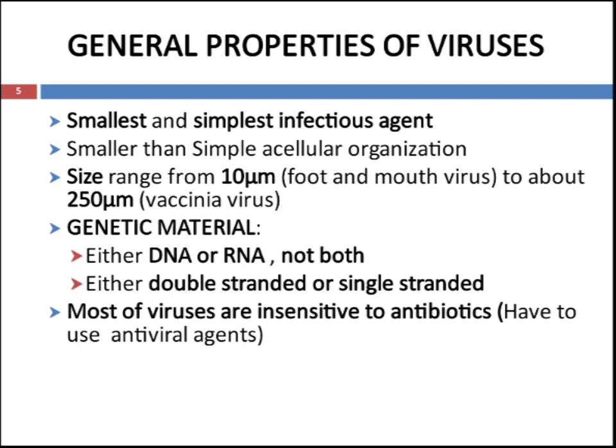Before going to the structure, we can discuss some general properties of virus. Viruses are the smallest and simplest infectious agents, which are smaller than simple acellular organization. Usually size will range from 10 nanometers like in foot and mouth viruses to about 250 nanometers like in vaccinia virus. Viruses have either DNA or RNA as their genetic material.